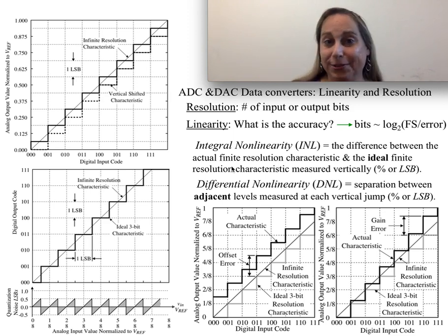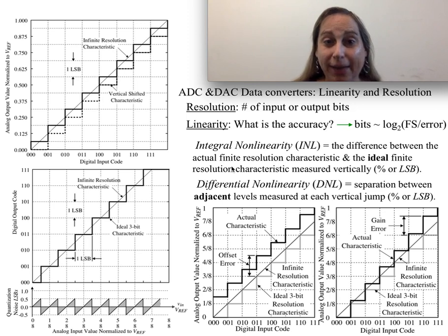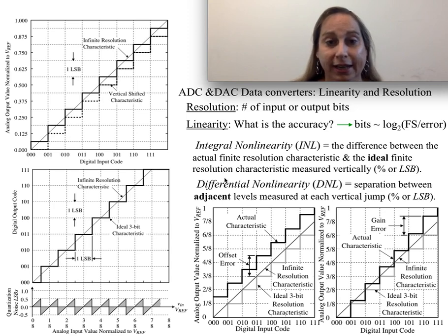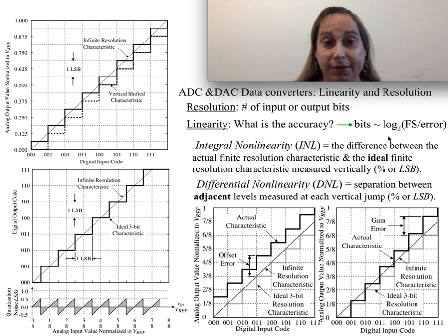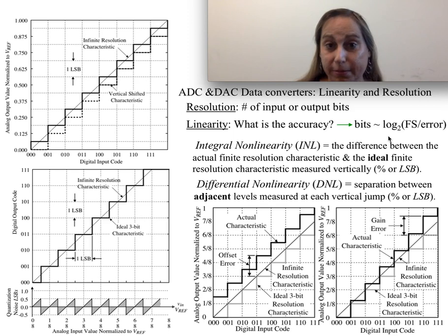That's why people like the term resolution — because it doesn't say anything else other than here are the IOs I've got to work with. What the user really asks is: how accurate is it actually? The term used for this is linearity. That's the accuracy you care about, and your effective bits are roughly going to be log base 2 of your full-scale range divided by your error — in other words, what is my LSB, my granularity that I get to work with.